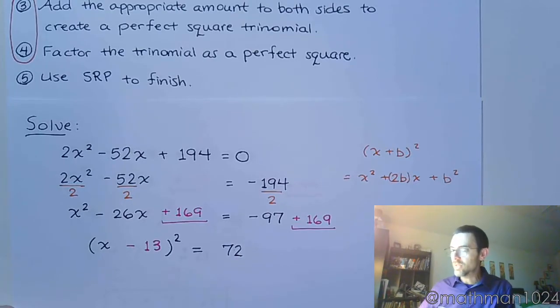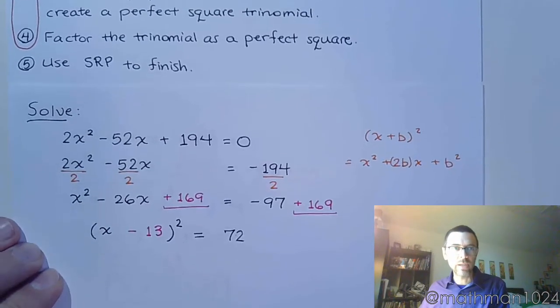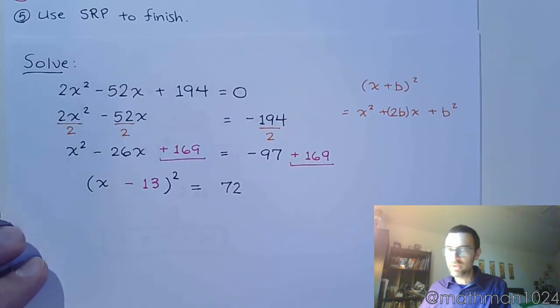So, now that I have this set up, I've factored as a perfect square. I added the right amount. I'm now going to use the square root property to finish this.